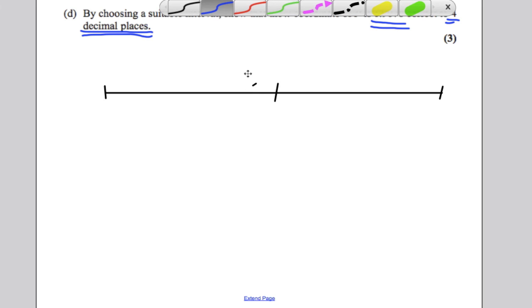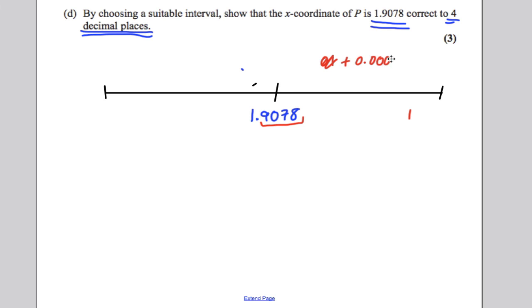So when we do that, we always do the same thing. Here is what we're trying to show is the root 1.9078. We want to show that it's correct to 4 decimal places. So we're going to add on 0.00005 and we're going to subtract 0.00005 from both sides. To get the upper and lower bound, this would be 1.90785 and this one would be 1.90775. So we're going to plug that into the function.